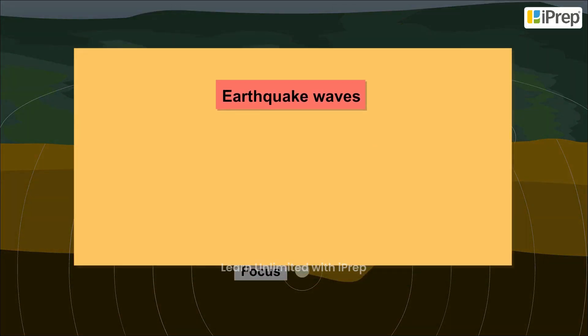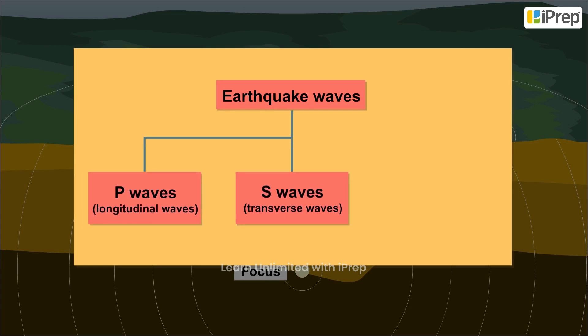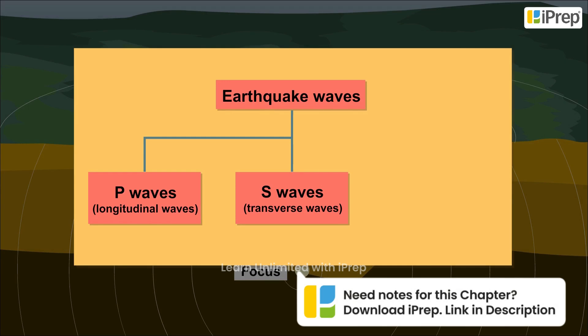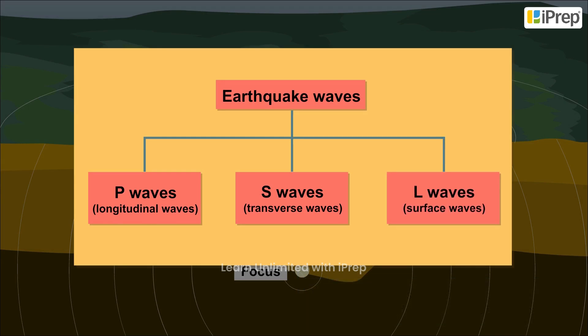There are three kinds of earthquake waves: P waves or longitudinal waves, S waves or transverse waves, and L or surface waves.